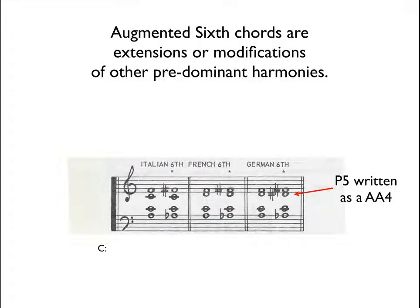Here are modifications of other predominant harmonies. There is an example of a German sixth where the E-flat — the perfect fifth — is written as a D-sharp, a doubly augmented fourth. We'll talk about that in a minute.